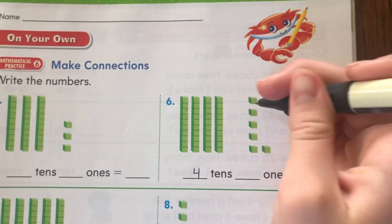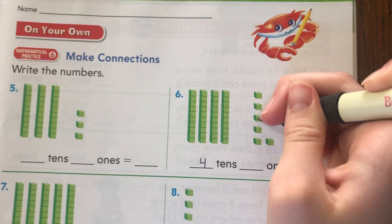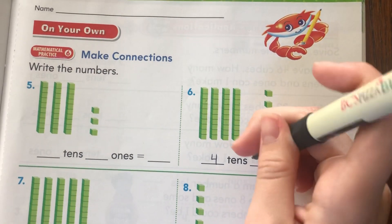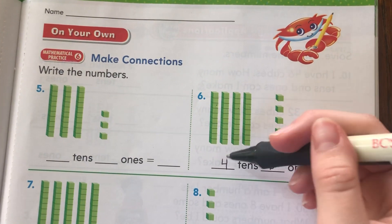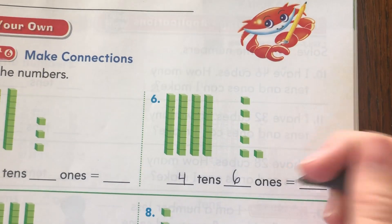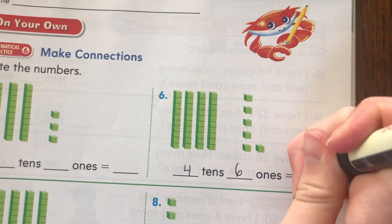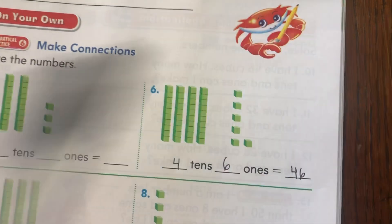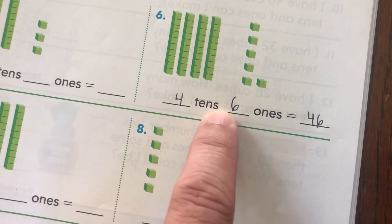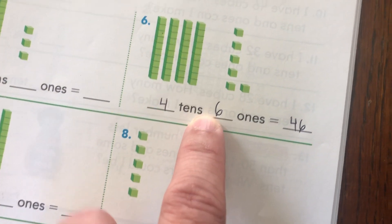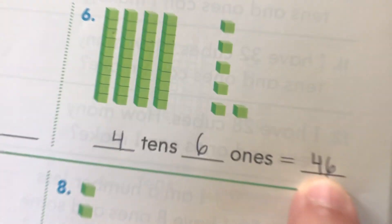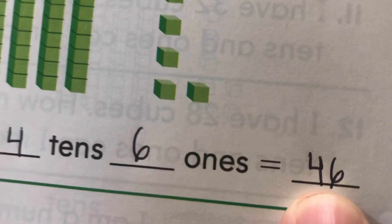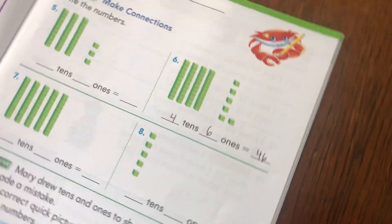And then over here are our ones: 1, 2, 3, 4, 5, 6 ones. As you can tell, you can see 46. So over here we put equals 46. You have 4 tens and 6 ones, and you squish them together and you can see you have 4 tens and 6 ones, which is the same as 46.